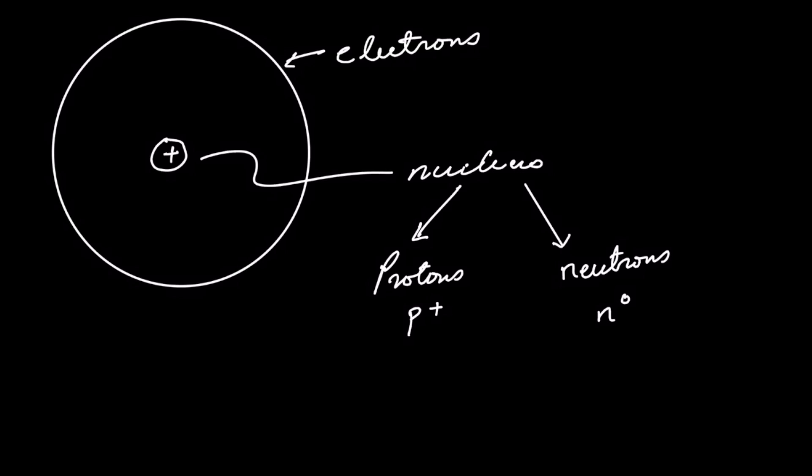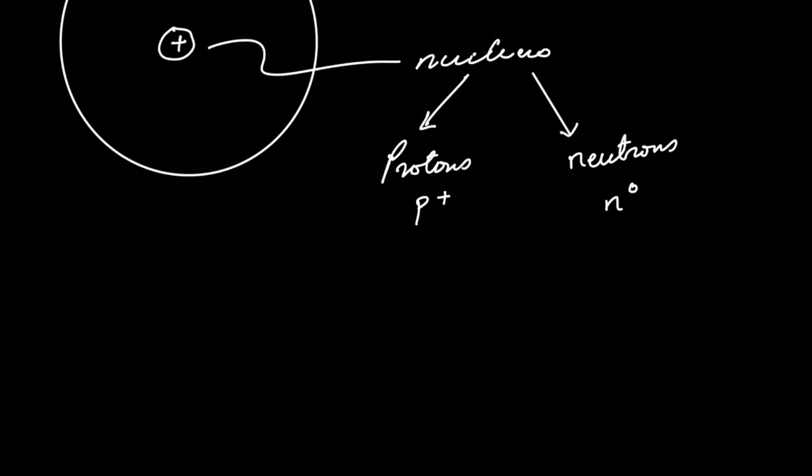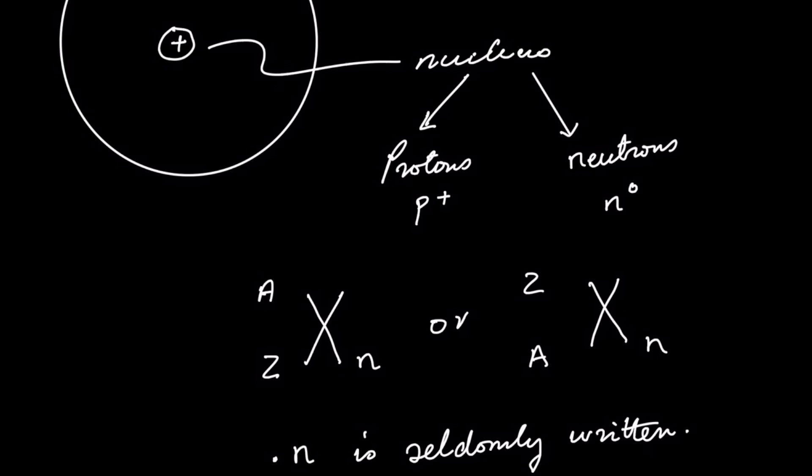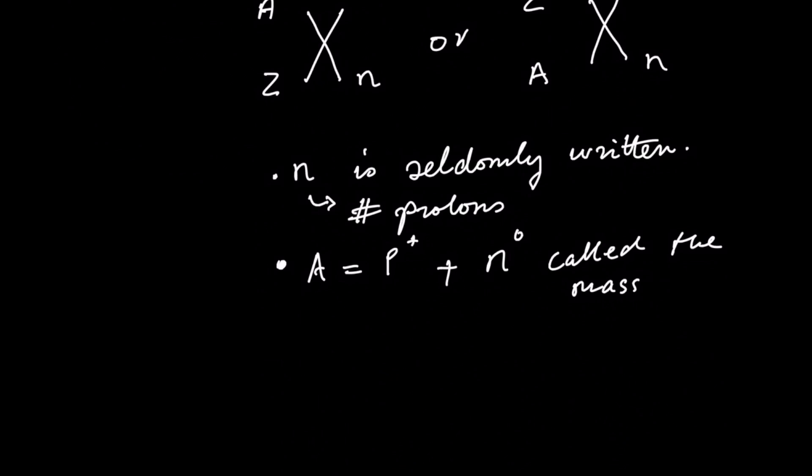We represent an element using the notation X, then we put the number of particles that are in the nucleus as A and the number of protons as Z. And in some instances, we also just put the number of neutrons on the right side. Or we can put Z on top, A at the bottom, and X n. Remember, n is seldom used. A is the number of protons and neutrons and we call it the mass number. Z is the same as the number of protons and is called the atomic number.